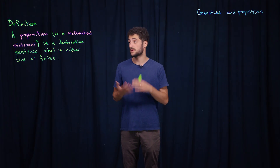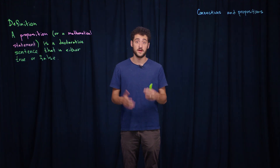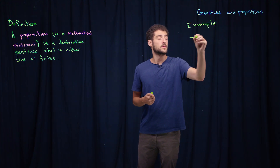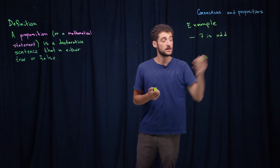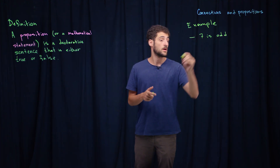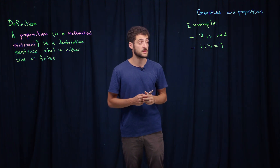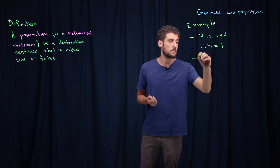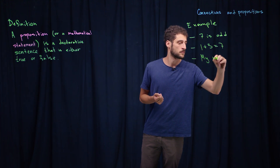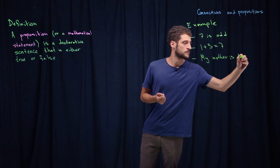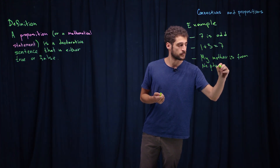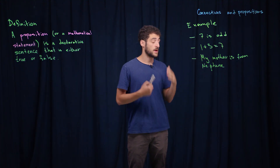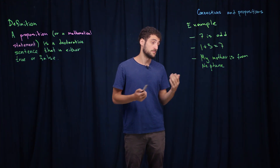A mathematical statement is a declarative sentence such that this sentence is true or false, and it cannot be both at the same time. For example, '7 is odd' is a mathematical statement because it's definitely true. '1 plus 3 is equal to 7' is also a mathematical statement because it's definitely false — note that it's false but nonetheless it's a mathematical statement. And it can be something like 'my mother is from Neptune.' It doesn't seem very mathematical, but it's a mathematical statement because it's a declarative sentence and it can be true or false — probably false, but it qualifies.